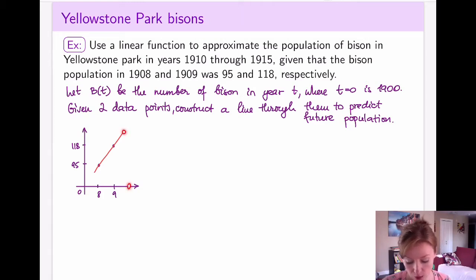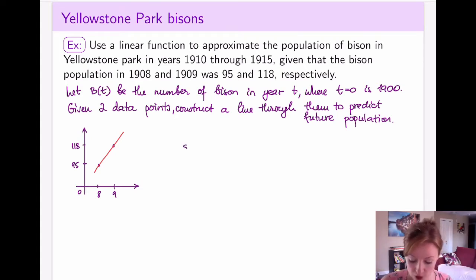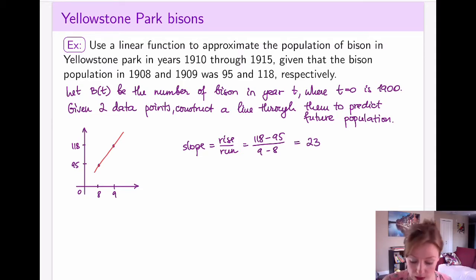What I'm going to do is construct a line through these two points and then use that line to calculate how many bison there are in year 1910, 1911, and so on. For the line, I need two pieces of information: a slope and a point. So let's figure out the slope. The slope is always rise over run, so I'm going to have 118 minus 95 divided by 9 minus 8, and that comes out to be 23. So my slope here is 23.